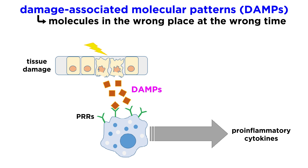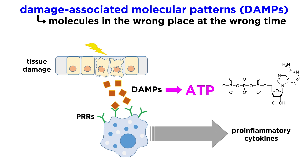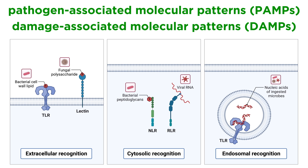DAMPs, on the other hand, are host molecules that appear in the wrong place at the wrong time. Think about ATP. ATP is all over the place inside cells, but it is rarely found outside of cells. If a cell senses extracellular ATP, it suggests that there is a damaged cell nearby, and in this case the extracellular ATP would be acting as a DAMP. Not only is the location of PAMPs and DAMPs important for immune signaling,